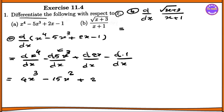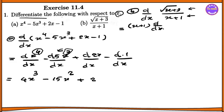This is the square root of x plus 3, divided by x plus 1. This is equal to the differential. Now we have to use the quotient rule. We need to look at the quotient. The derivative of a square root is 1 by 2. So d/dx of √(x+3), the square root gives 1 by 2, and x plus 3 is the inside function.